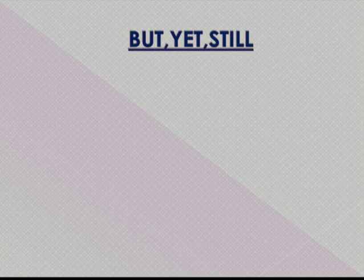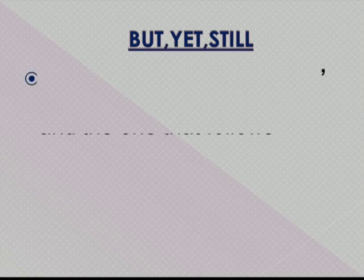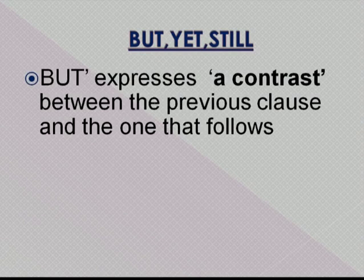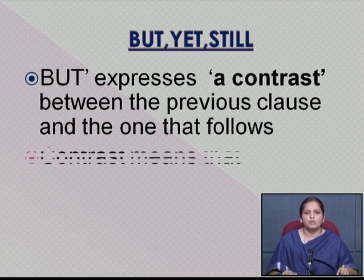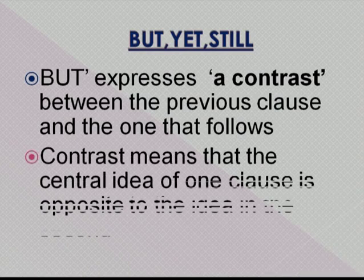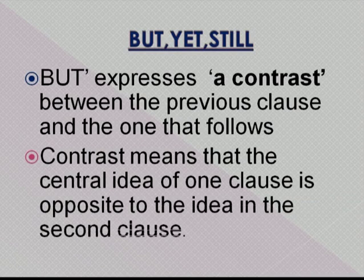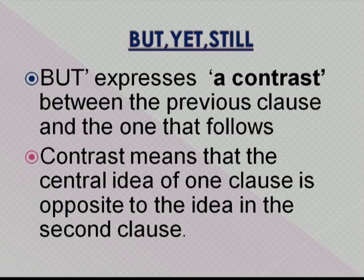There are various kinds of connectors. The next connectors are 'but', 'yet', and 'still' — these all show contrast. 'But' expresses a contrast between the previous clause and the one that follows. In grammar, contrast means that the central idea of one clause is opposite to the idea in the second clause. So, but, yet, and still are connectors which show contrast.